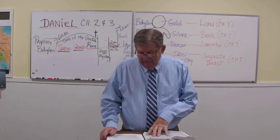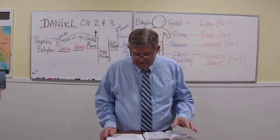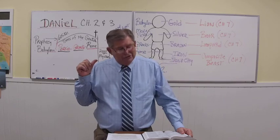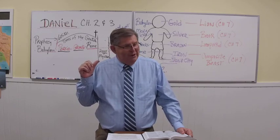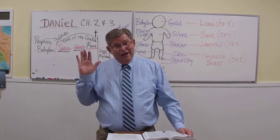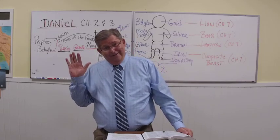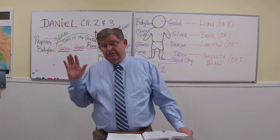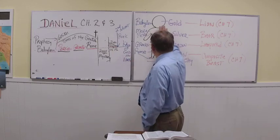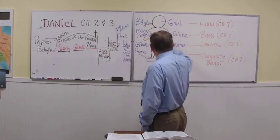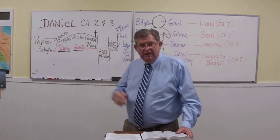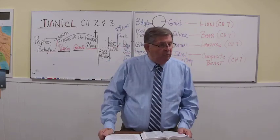In the introduction on the handout, this is the simplest prophetic picture presented in Scripture. You can't hardly miss this — you really have to work at it. The commentaries all say the gold represents Babylon, silver represents Medo-Persia, then the Greeks, and then the Romans. That's the history of world history.